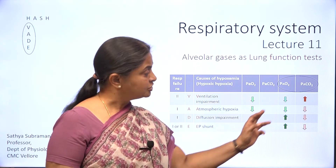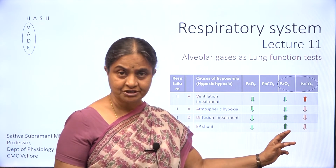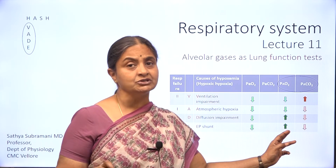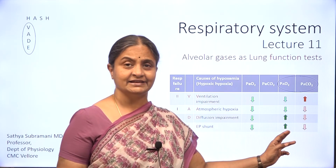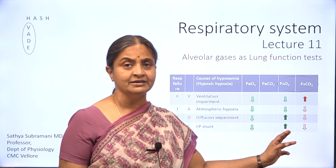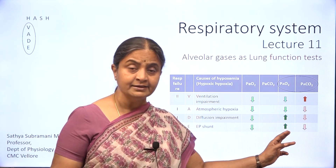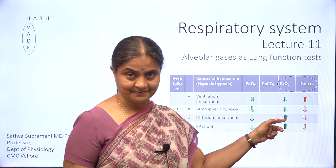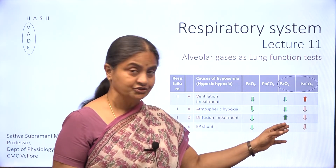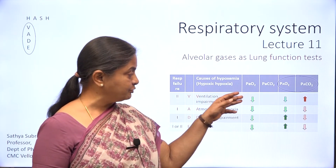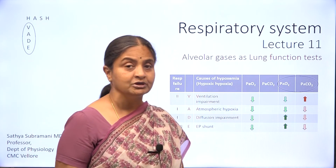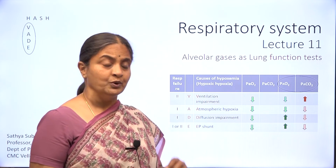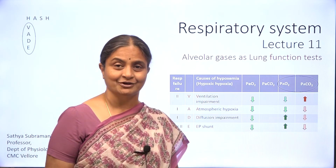Arterial oxygen is always lower than alveolar oxygen. The value is called the AA oxygen difference or AA oxygen gradient. There is a normal value for that, and if the value is higher than normal, you would understand that there is diffusion impairment. So estimating alveolar oxygen will not only help you differentiate between the states, it will also help you compute the alveolar-arterial oxygen difference to confirm whether there is diffusion impairment or not.